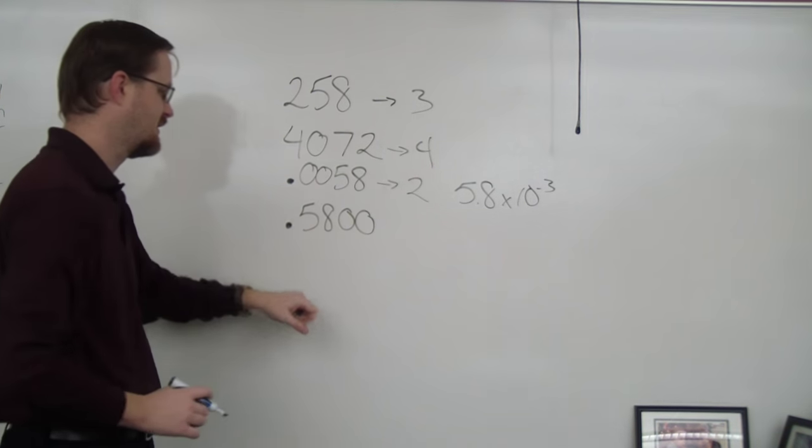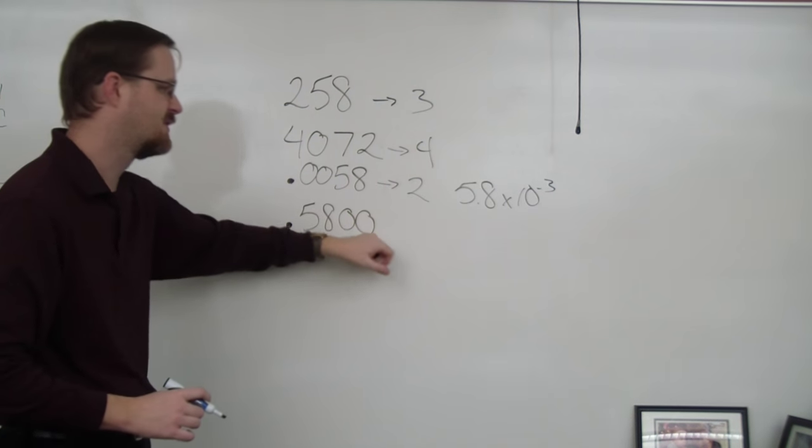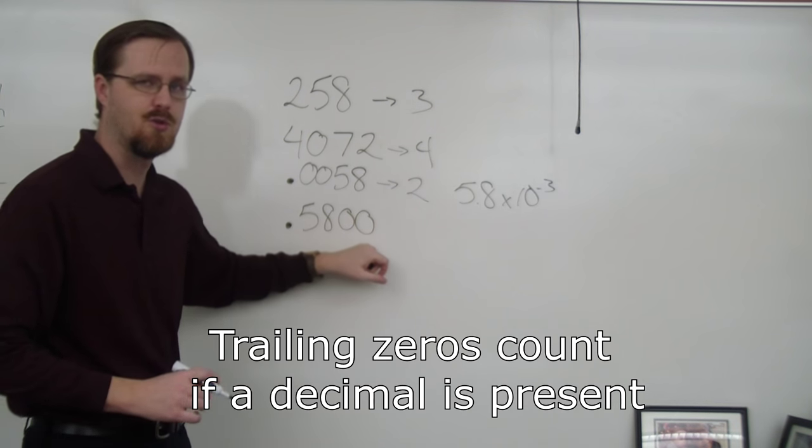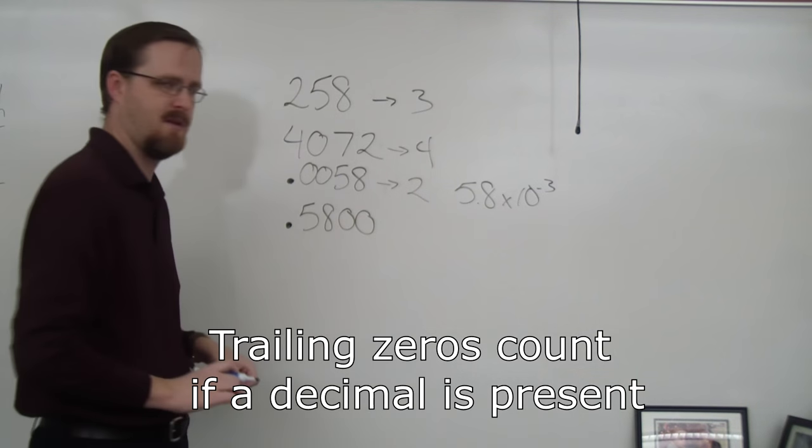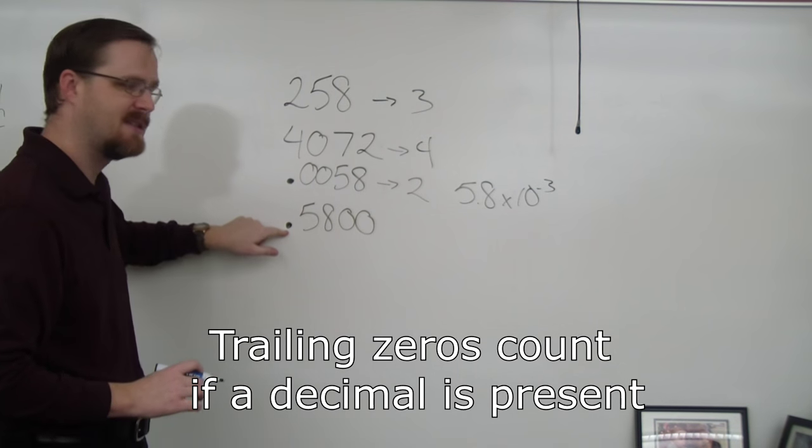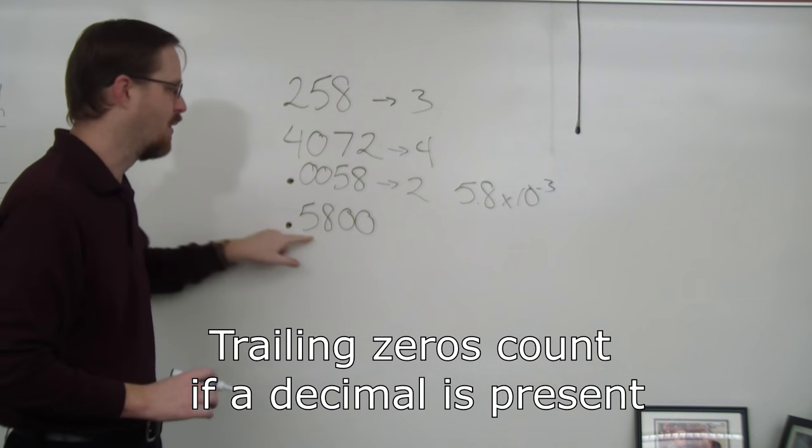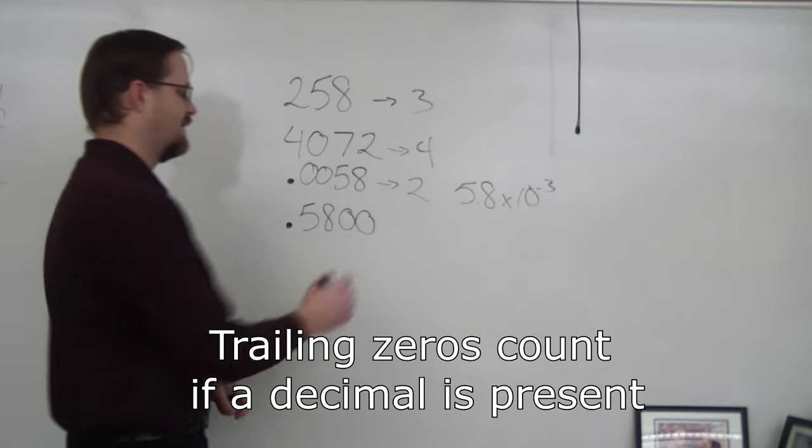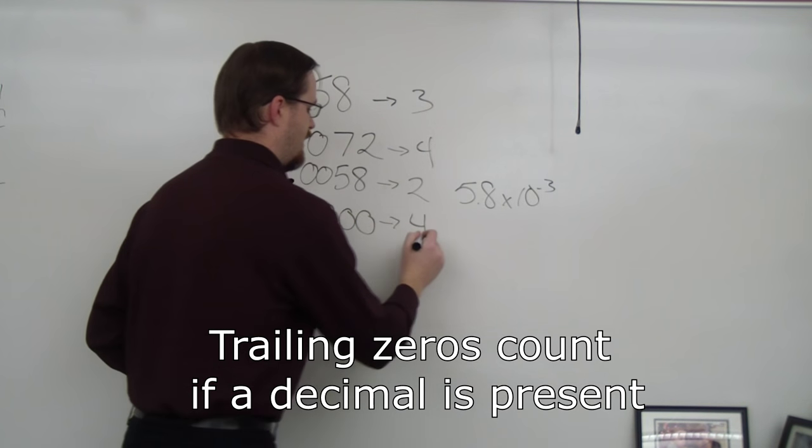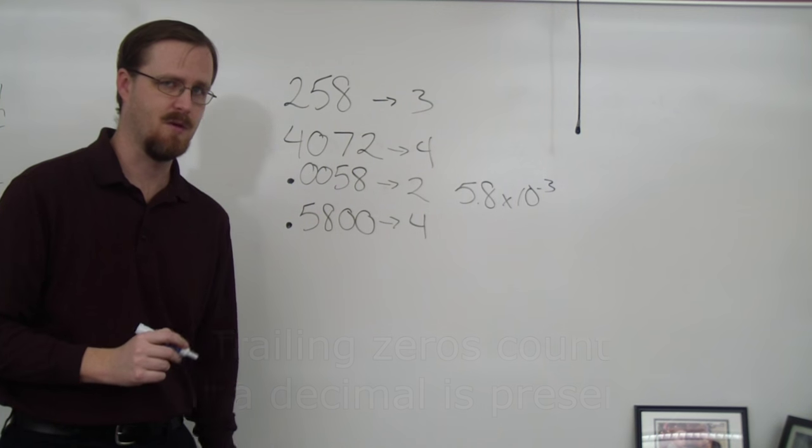This one, however, if I reverse it and I get .5800, well, these are called trailing zeros. These are zeros at the end of a number and there is a decimal present. Therefore, they will count. So in this case, all four numbers count as sig figs.